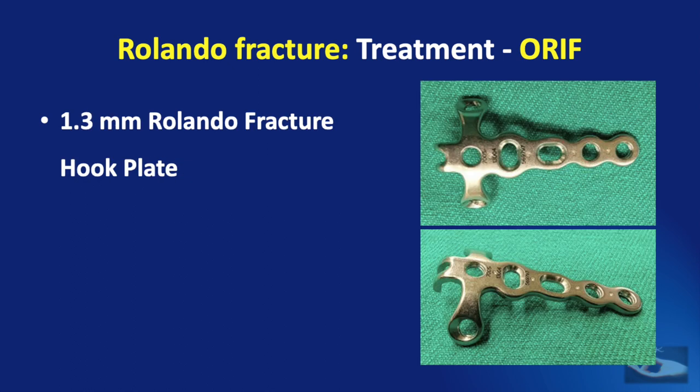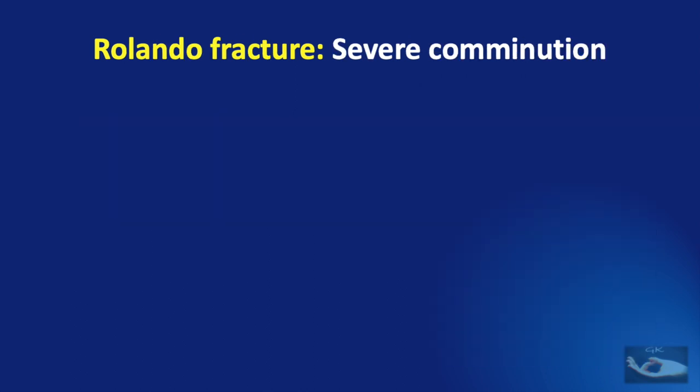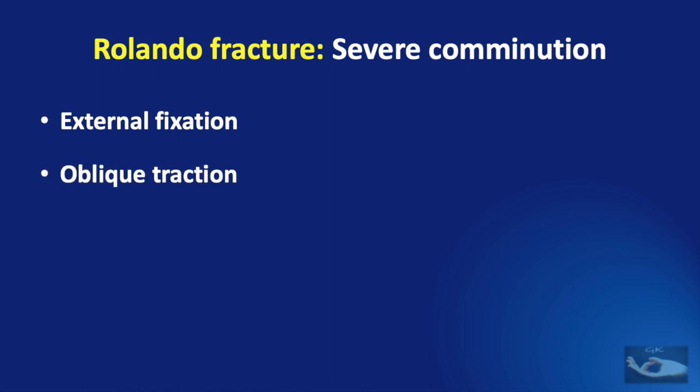A 1.3 mm Rolando fracture hook plate is also available for fixing these fractures. However, if there is severe comminution with very small fracture fragments, two options are available: external fixation and the method of oblique traction.